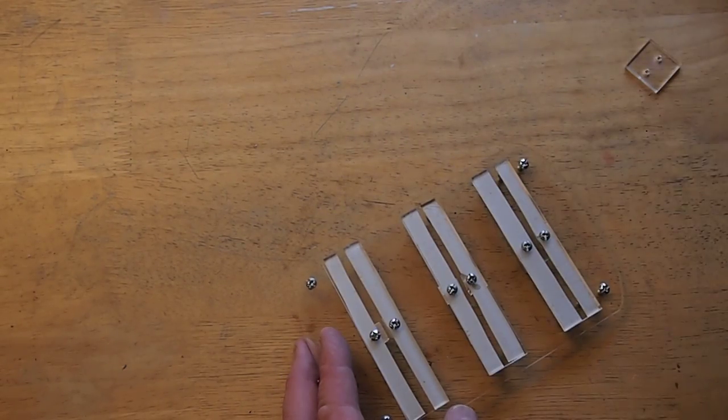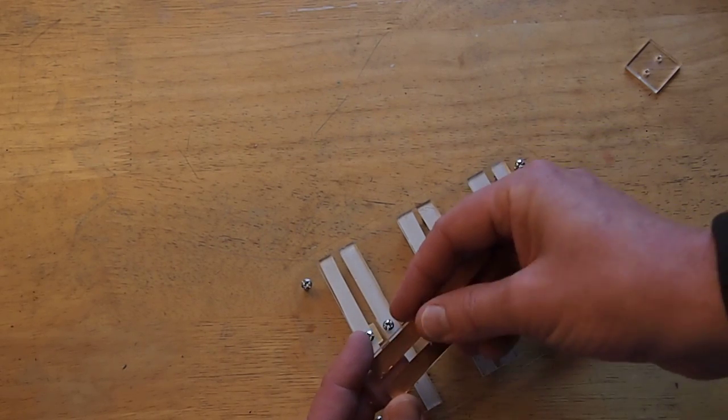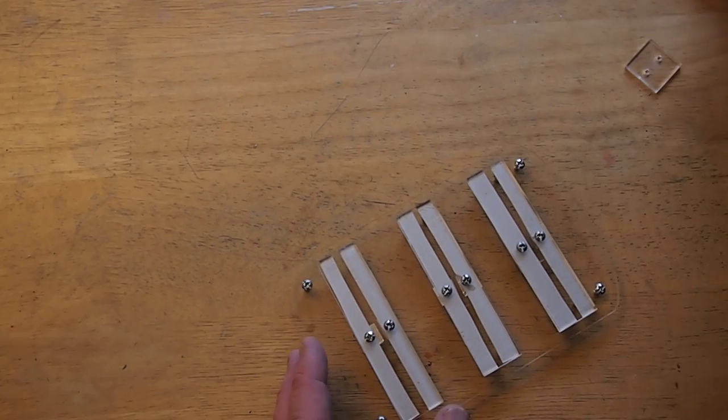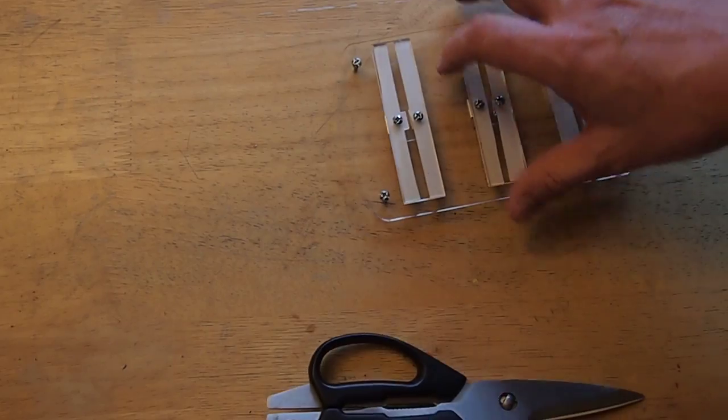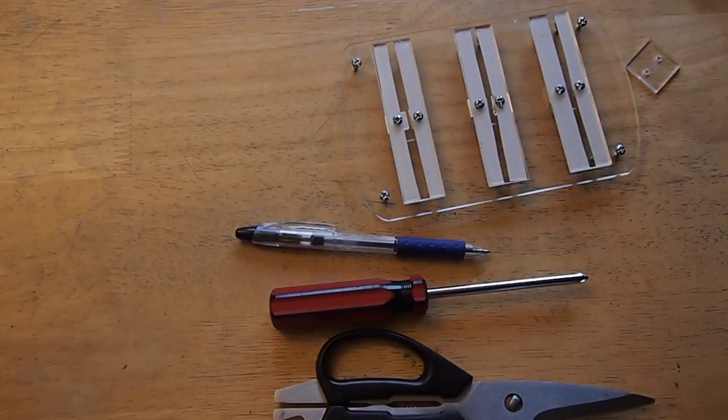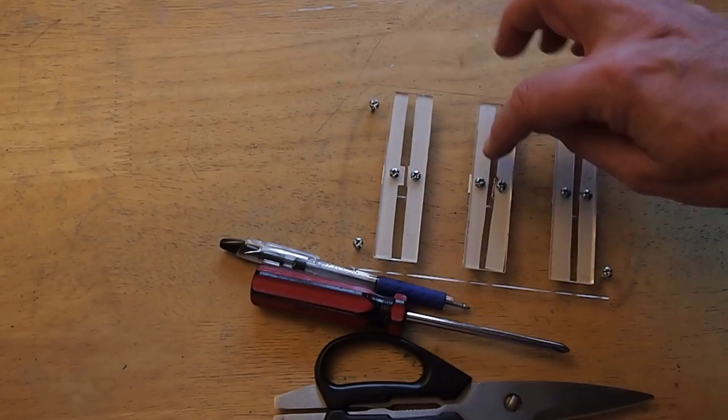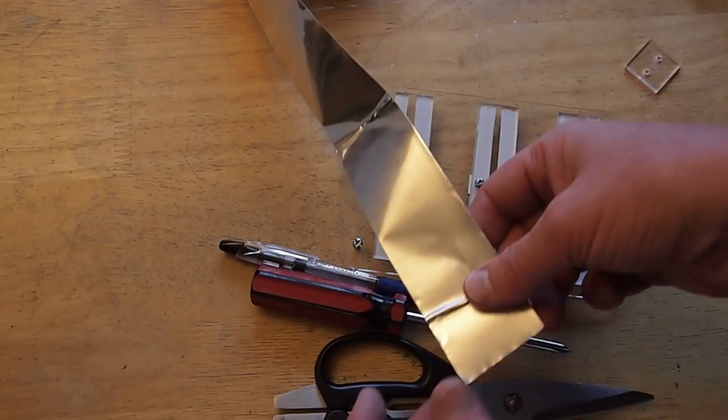And then there's a longer piece which is about like this. To put it together really you just need a few things: a pair of scissors, screwdriver, and a pen to poke out the points.